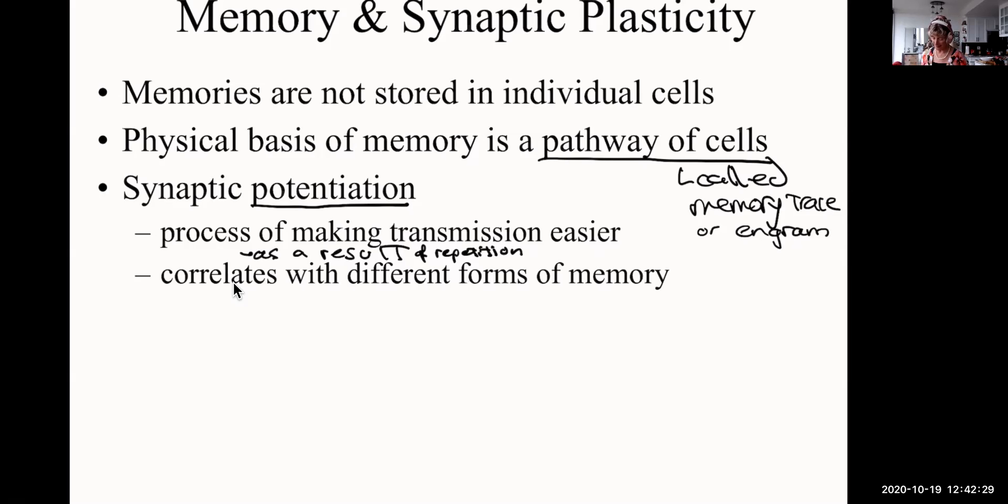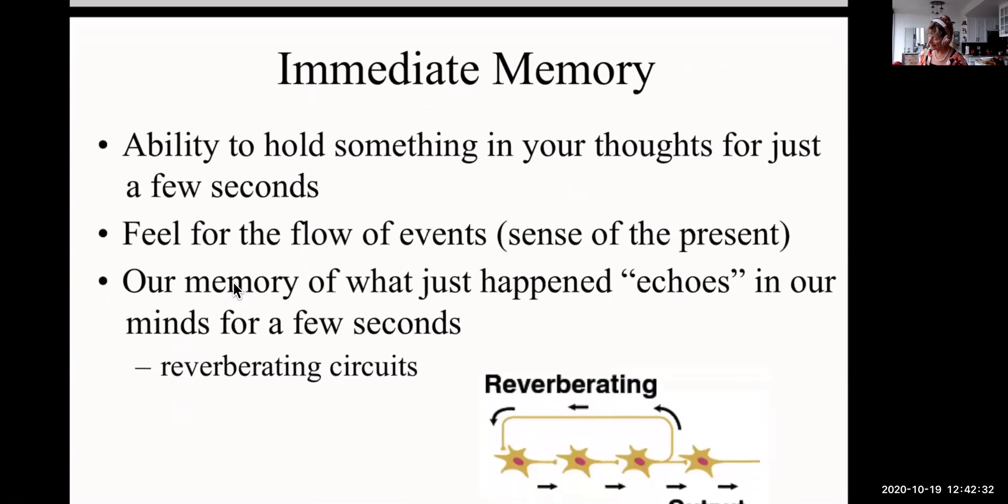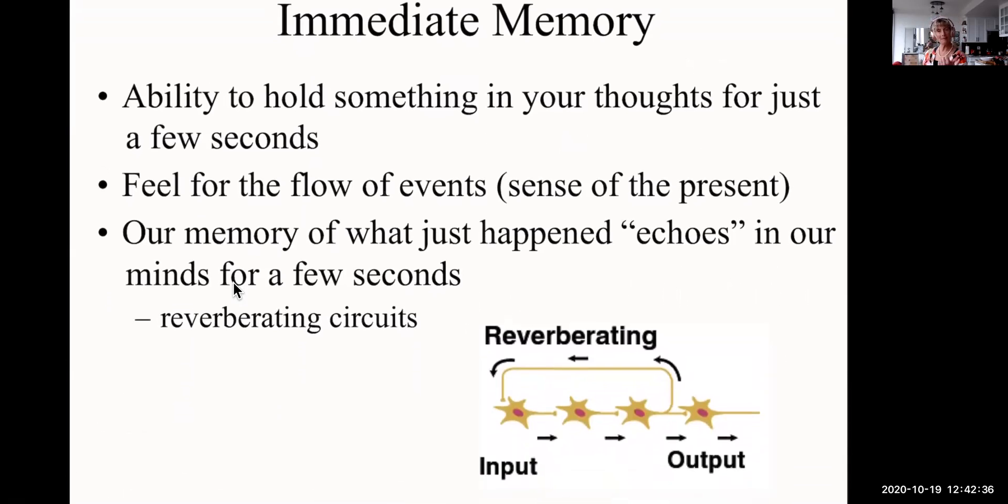Potentiation correlates with different forms of memory. There are different forms of memory: immediate, short-term, and long-term. Immediate memory is the ability to hold something in your thoughts for just a few seconds. It gives you a feel for the flow of events, a sense of the present. What just happened echoes in your mind for a few seconds. If you're reading a sentence, you don't forget the first words of the sentence by the time you're at the end of that sentence. It seems to be reverberating circuits that assist that kind of immediate memory.